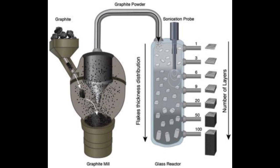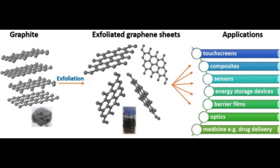Chemical vapour deposition (CVD) is one of the most widely used methods for large-scale graphene production. It involves heating a substrate, typically copper, and introducing a carbon-containing gas, such as methane, which decomposes on the substrate's surface to form a graphene layer. It can produce high-quality, large-area graphene sheets.